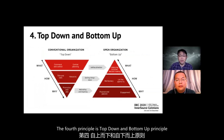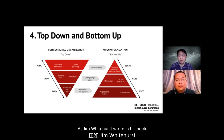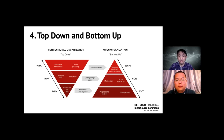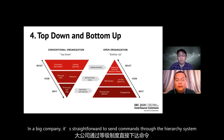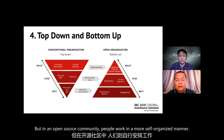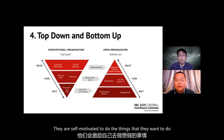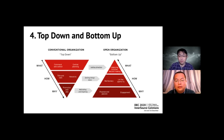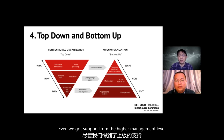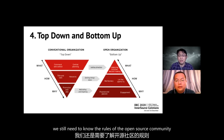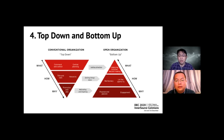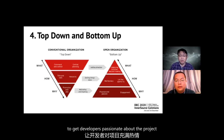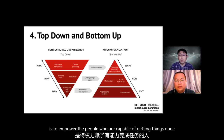The fourth principle is the top-down and bottom-up principle. As Jim Whitehurst wrote in his book Open Organization, there is a lot of difference between a conventional organization and an open organization. In a big company, it's straightforward to send commands through the hierarchy system. But in an open source community, people work in a more self-organized manner — they are self-motivated to do the things they want to do. Even with support from higher management, we still need to understand the rules of the open source community to get developers passionate about the project.